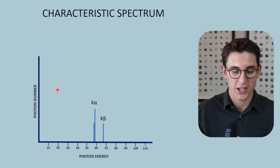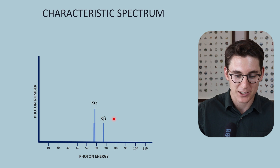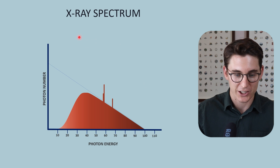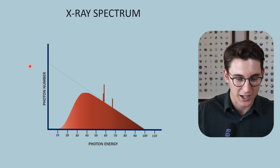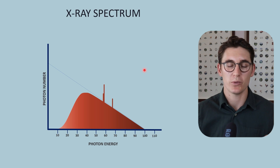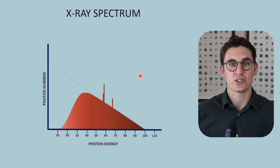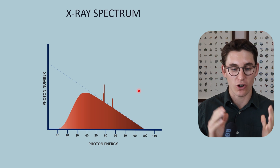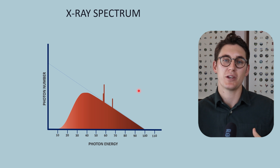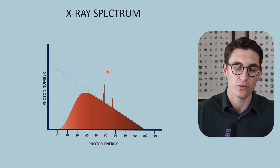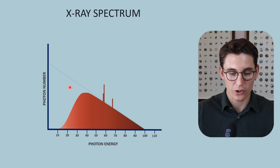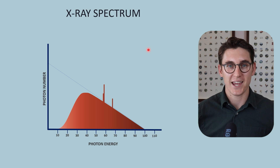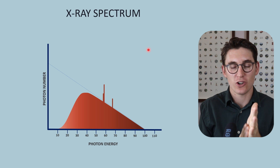Looking again at this graph front on, we can see our k-alpha and k-beta peaks, specific for a tungsten atom. If we combine these with our Bremsstrahlung radiation curve, this is what's known as our x-ray spectrum. There are two things we look at when examining this spectrum: x-ray beam quality — the average energy of this x-ray spectrum — and x-ray beam quantity — the number of photons, or the area under the curve. It's important to note that this is a spectrum with multiple different energies; an x-ray spectrum is not monoenergetic.